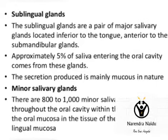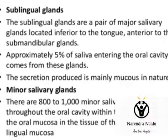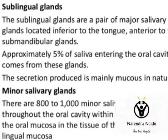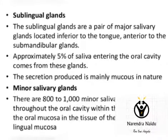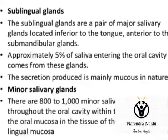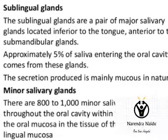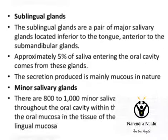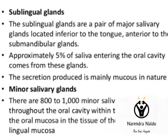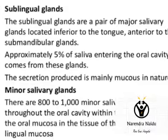The next one is sublingual glands. As the name indicates, these are located below the tongue, inferior to the tongue portion. Approximately 5% of the total saliva which enters the oral cavity comes from these sublingual glands, and the secretions are mucus in nature.